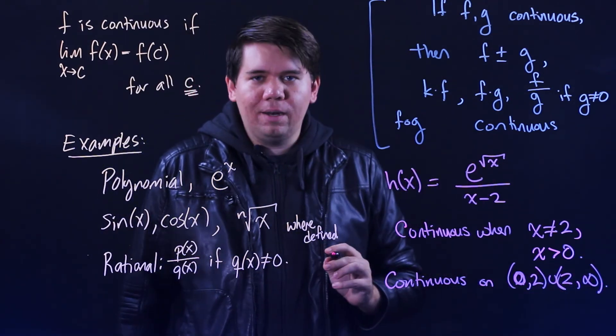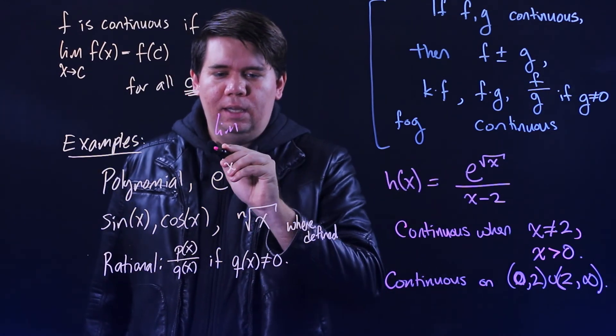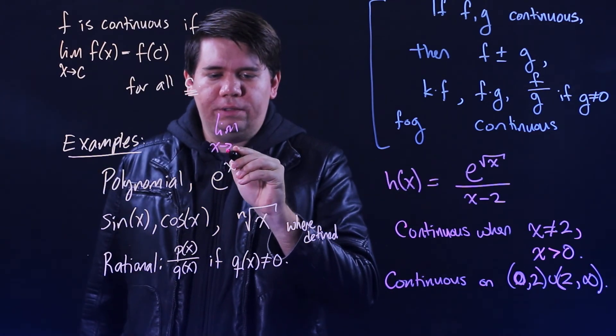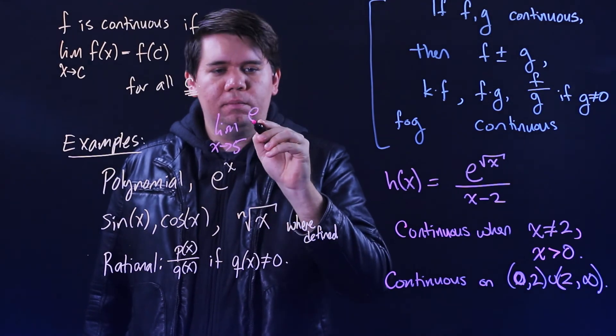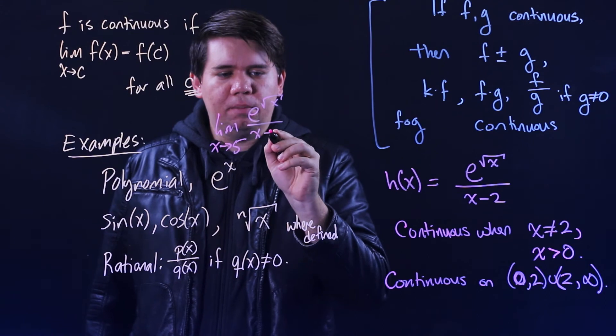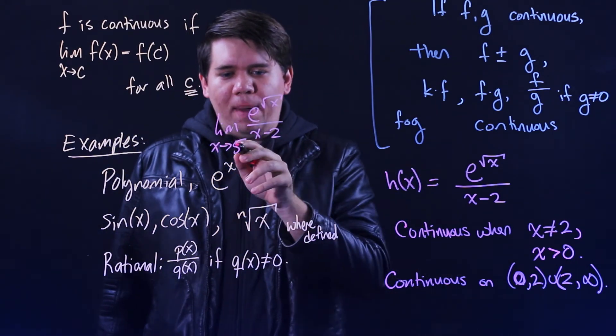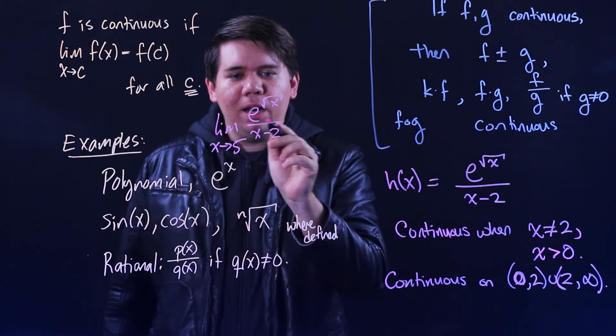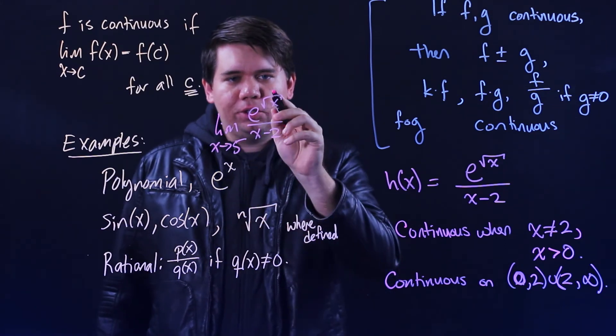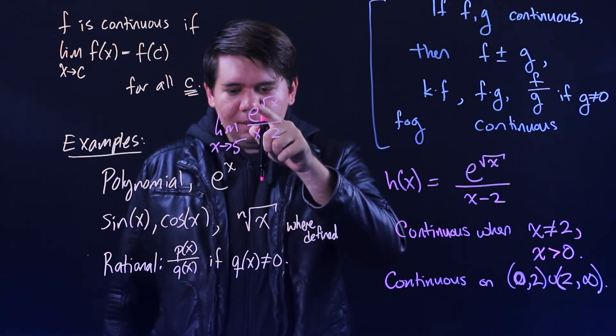At all those values, it is continuous. So if you saw a problem like, what is the limit as x approaches 5 of e to the square root of x all over x minus 2? You can think, well, there's nothing bad happening at 5. The bottom is well-defined. The square root of 5 is well-defined.